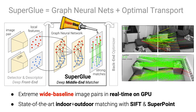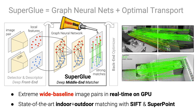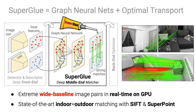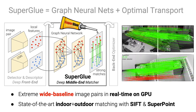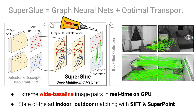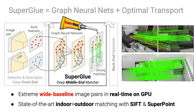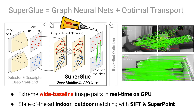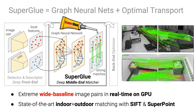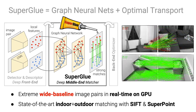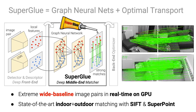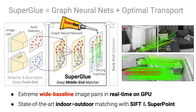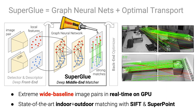SuperGlue is a deep neural network that performs feature matching. It combines the best of two worlds: deep learning with graph neural networks and classical optimization with optimal transport. SuperGlue is a middle end that estimates matches between local features in two images while rejecting unmatched points. As you can see here, it can successfully match image pairs with extreme baseline in real time, resulting in state-of-the-art pose estimation with both classical and learned features.